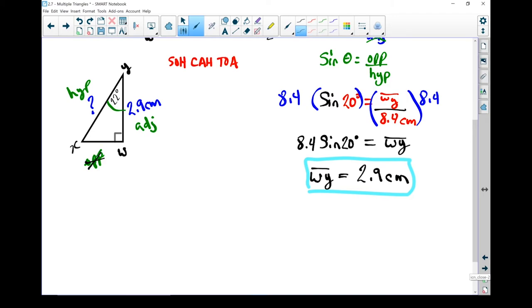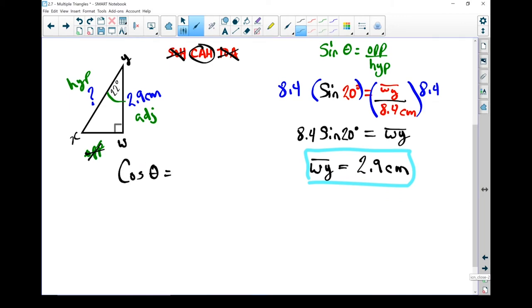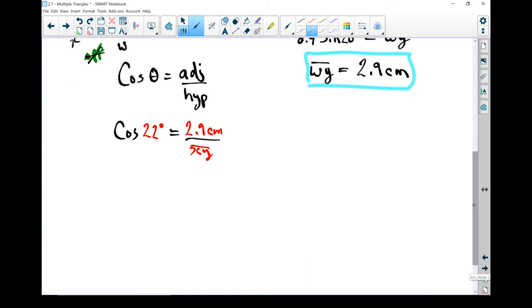So anything with an opposite we're going to ignore. Sine has opposite. Not useful to us right now. Tan has opposite. Not useful. This is a cosine question. Cos of theta equals adjacent over hypotenuse. Let's put in what we know. Cos. I know my angle. It's 22 degrees. So it's cos of 22 degrees equals my adjacent side. I know that as well. 2.9 centimeters divided by my hypotenuse. Now that's the piece I don't know. That's what I'm trying to solve for. And I'm going to call it XY because it's side XY.